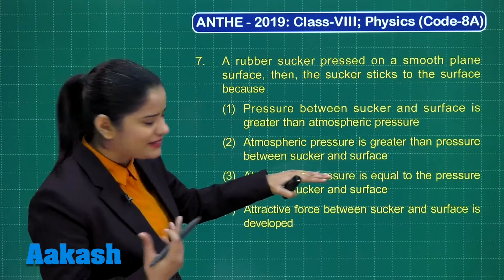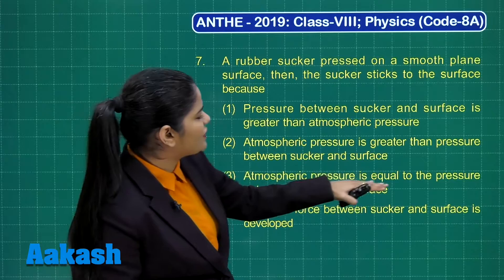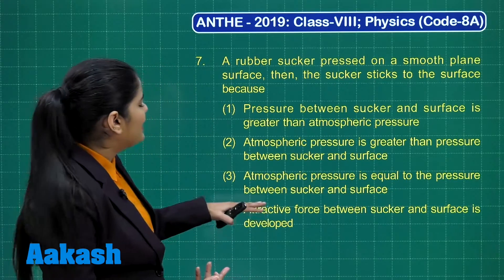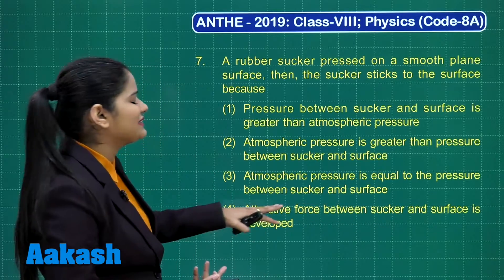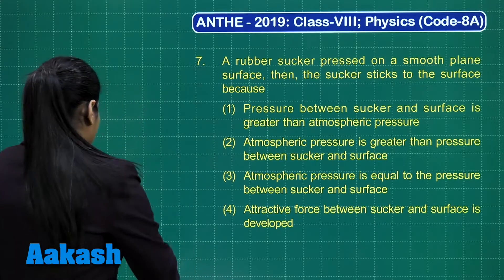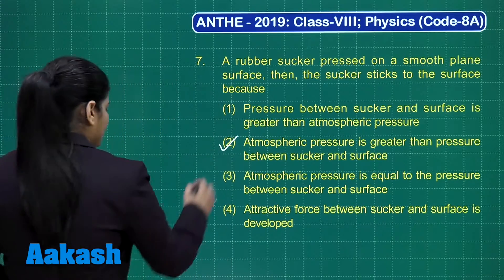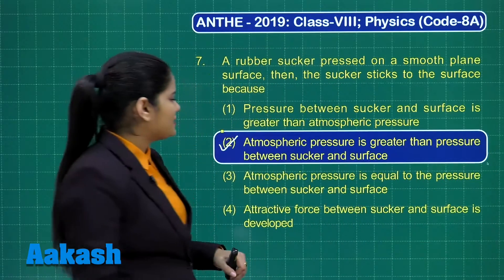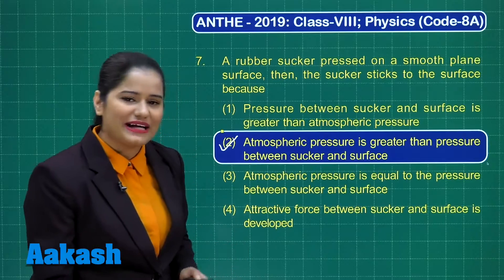The second option says atmospheric pressure is greater than the pressure between the sucker and the surface, which is correct. The third option says they are equal, which is incorrect. Option four says an attractive force between the sucker and surface is developed, which is also incorrect. So the correct answer is option number 2.